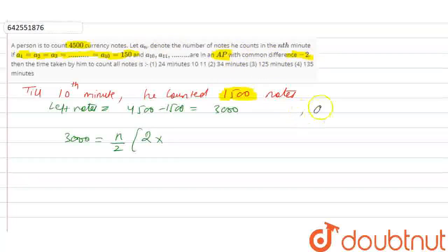A10 was 150, so A11 was in AP with common difference minus 2, so it will be 150 minus D is equal to 148.